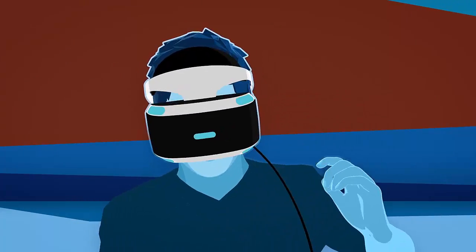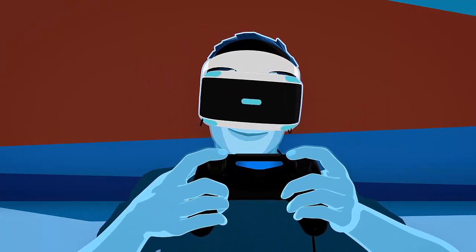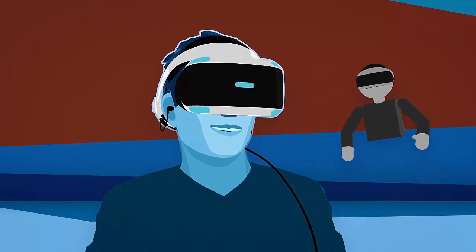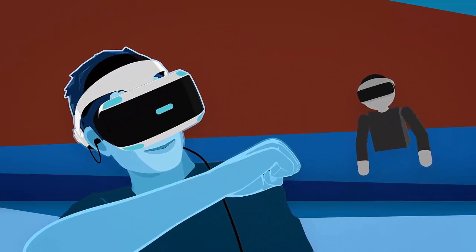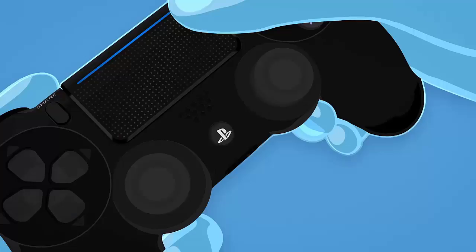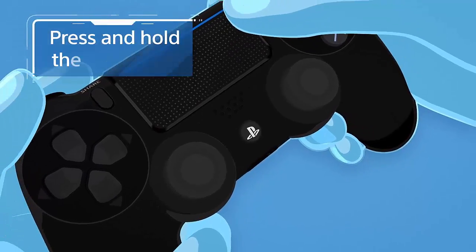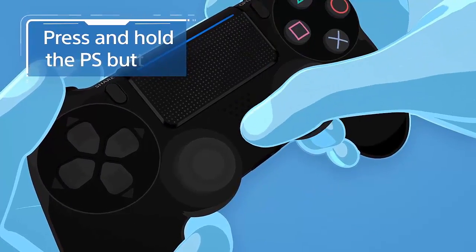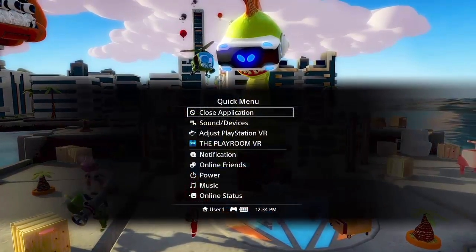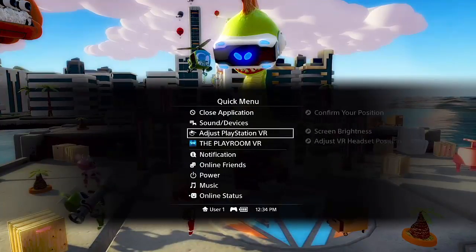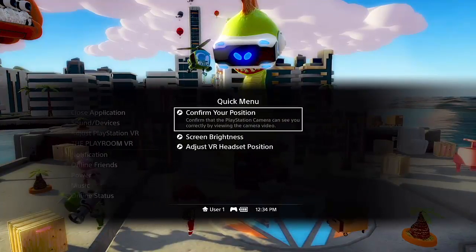The first time you use PSVR, the headset will need some adjustments. Just do what our little friend here tells you in the PSVR's UI setup. He knows what he's doing. To recalibrate or change your settings later on, press and hold the PS button on your controller to bring up the Quick menu and select Adjust PlayStation VR or go to the Settings menu for more setting options.